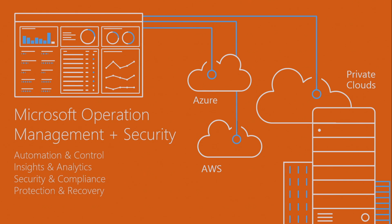OMS really consists of four major areas. The first is automation and control — the goal of OMS is to give you unified management across your infrastructure and your applications. Automation and control is how you get all of your infrastructure under management. The second major area is insights and analytics, which allows you to understand what's going on inside your infrastructure and applications — not only in your on-premises data center, but as you move things into Azure or other clouds. The next big area is security and compliance, where we've invested heavily to bring in all those insights to understand security threats and how to mitigate them.